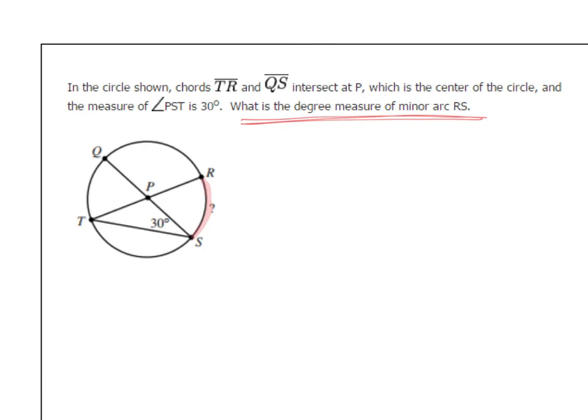So one thing, if P is at the center, all of these are radii of the circle, and they will all be the same length. And so I want you to think about this triangle down here. It ends up being an isosceles triangle with two sides equal. And if two sides are equal, there will also be two angles equal. So this angle down here will be a 30 degree angle.